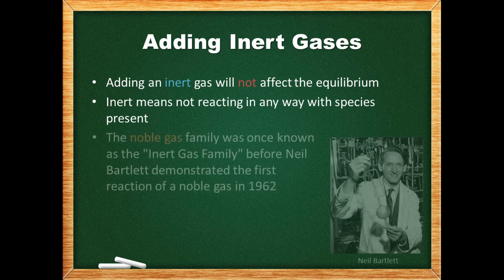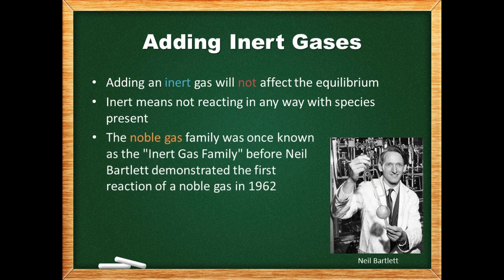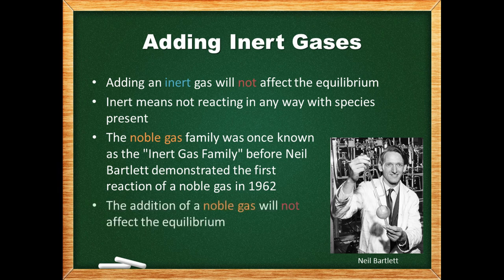The noble gas family was once known as the inert gas family, as it was believed all noble gases were entirely inert to chemical combination. However, in 1962, Neil Bartlett reacted fluorine with xenon at the University of British Columbia, demonstrating that noble gases could react. The addition of a noble gas will not affect the equilibrium.